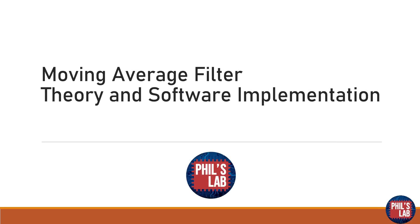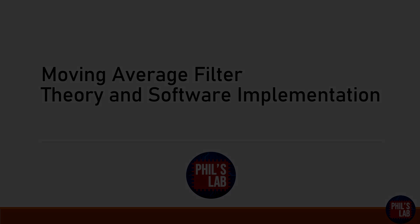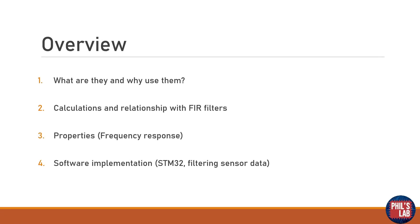In this video we'll be looking at the moving average filter. In particular we'll be looking at theory and a final software implementation on an embedded system. Here's what we'll be covering. We'll look at what they are and why we actually use these filters. Then we'll see how to calculate the filter output from input samples and the relationship the moving average filter has with FIR filters. We will also look at some of the properties of these filters, in particular the frequency response. And lastly we will actually implement these filters in real time on an STM32 microcontroller filtering some sensor data.